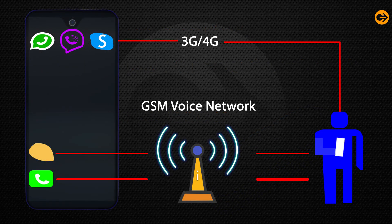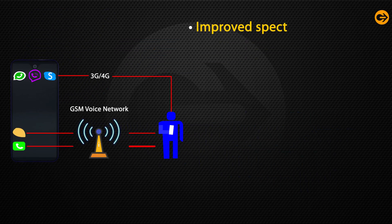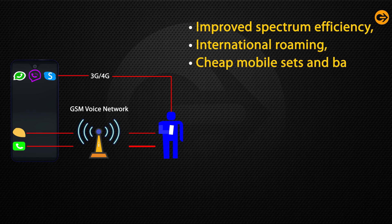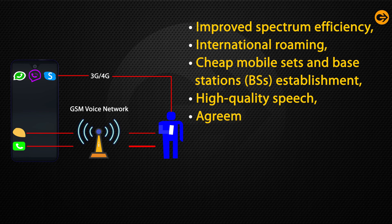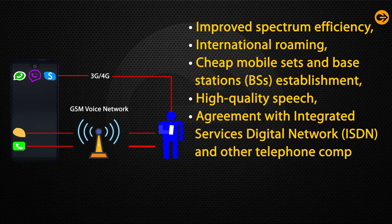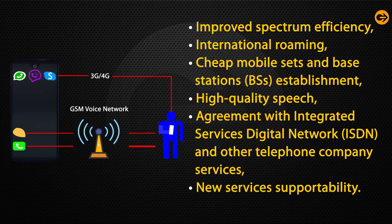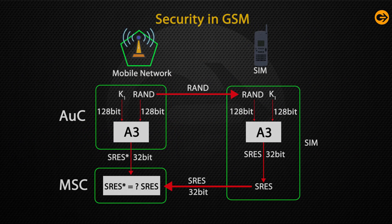Now we will talk about the features of GSM. The system has wide advantages and efficiency over any other system, and these are as follows: improved spectrum efficiency, international roaming, cheap mobile sets, base stations establishment, and high quality speech. Also, agreement with integrated services digital network, that is ISDN, and other telephone company services. It also has new services supportability.